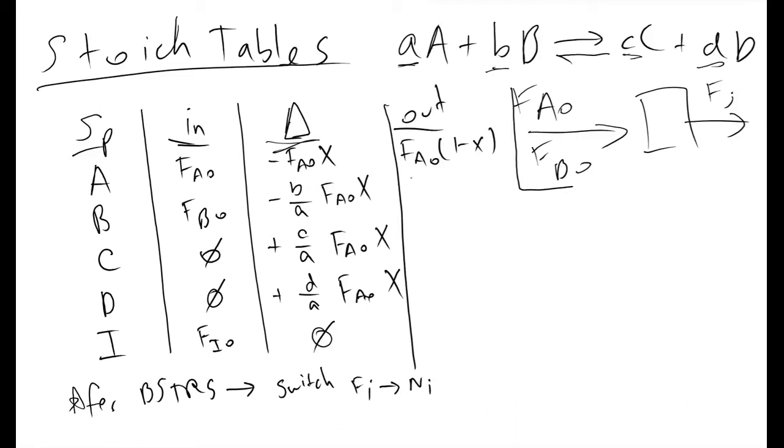At this point, what we'll often do, and what they do in the textbooks, is define a variable called theta. This makes things nice for us, because we can write what's coming out of B as FA0 times theta sub B minus b over a times x. Theta sub B, or theta sub i to keep things generic, is equal to Fi0 over FA0.